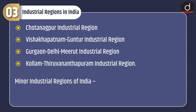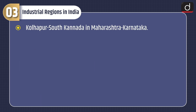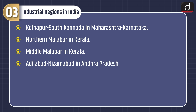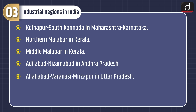Minor industrial regions of India are Jaipur-Ajmer in Rajasthan, Kolhapur-South Kannad in Maharashtra-Karnataka, Northern Malabar in Kerala, Middle Malabar in Kerala, Adilabad-Nizamabad in Andhra Pradesh, Allahabad-Varanasi-Mirzapur in Uttar Pradesh, and Bhojpur-Munger in Bihar.